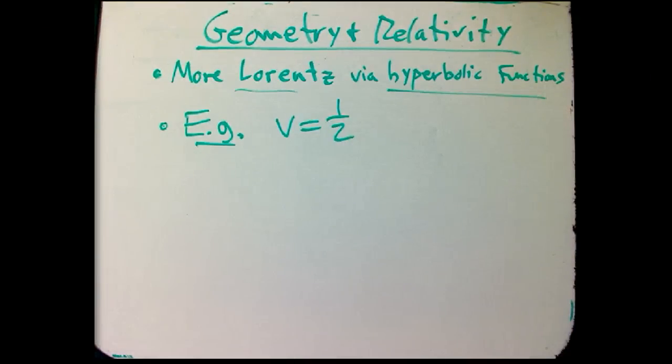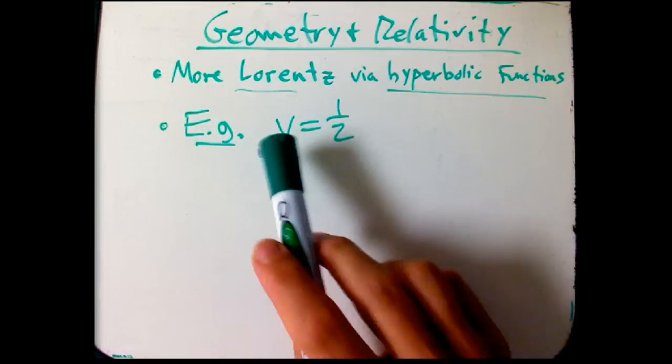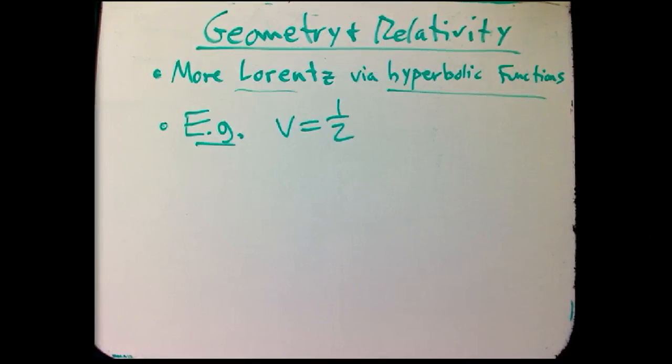Remember we did an example a couple videos ago about velocity equals 1/2, and in particular adding a velocity 1/2 to itself, and of course not getting 1, which was the non-Newtonian surprise.